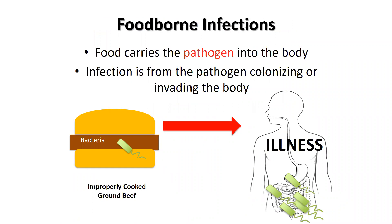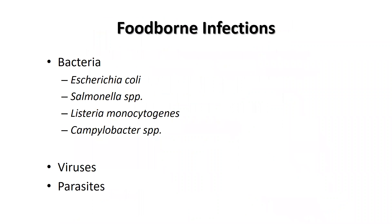We have to ingest the pathogen in order to get sick. There are various types of pathogens that cause foodborne infection. This includes bacteria such as E. coli, Salmonella, Listeria monocytogenes, and Campylobacter. Also viruses such as norovirus and hepatitis A virus, as well as parasites such as Toxoplasma, Cyclospora, and others.